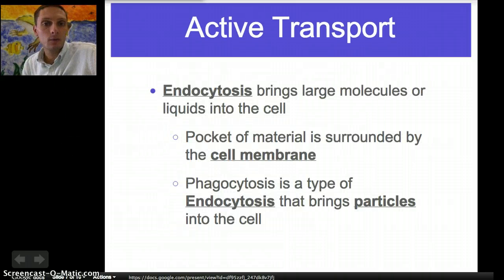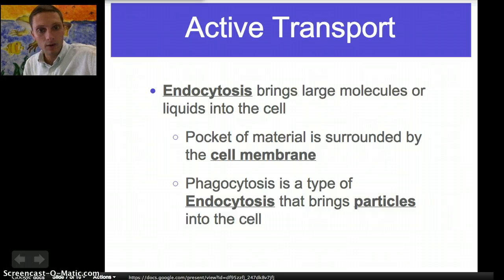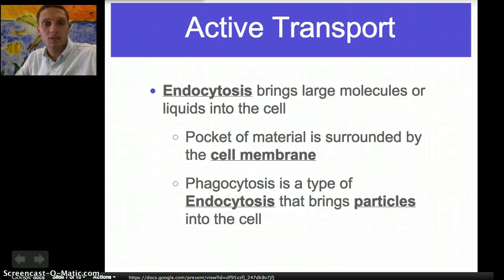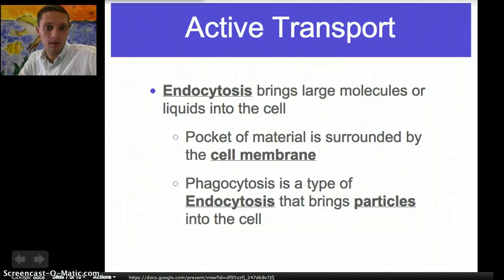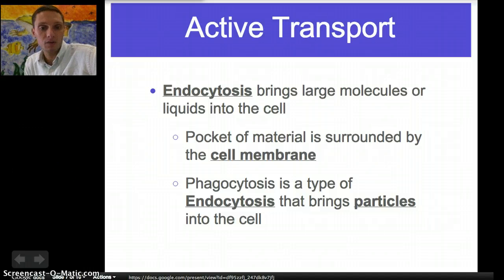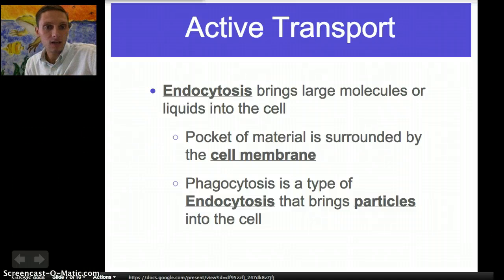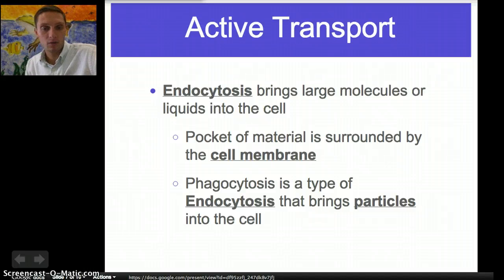The other two types of active transport we're going to talk about are endocytosis and exocytosis. In endocytosis — "endo" meaning bringing in — we're bringing large molecules or liquids into the cell. How this works: a pocket of material is surrounded by the cell membrane and is actually brought inside the cell. Phagocytosis is a type of endocytosis that is specific to bringing particles into the cell. So endocytosis is the broader term, while phagocytosis pertains exactly to bringing particles into the cell.